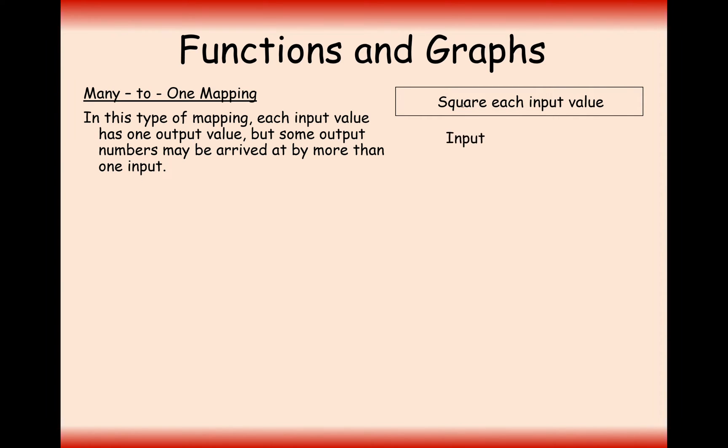For example, squaring each input value. It's very true that each input value will have only one output value. For example, minus one will have an output value of one, one will have an output value of one, minus two will have an output value of four, and two will also have an output value of four.